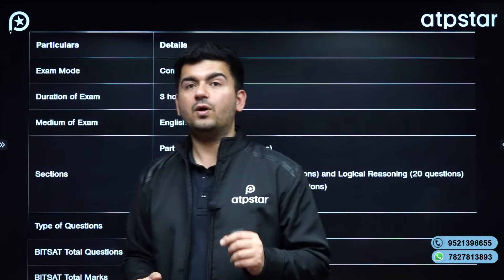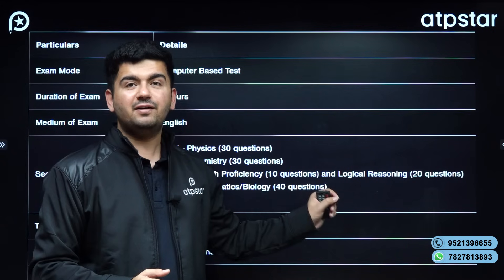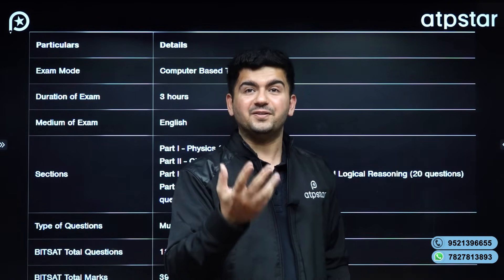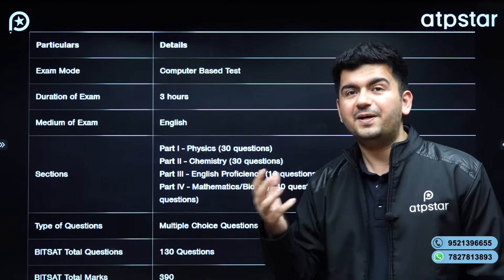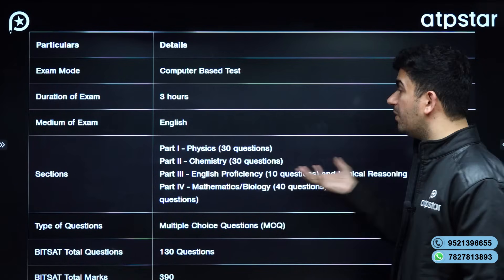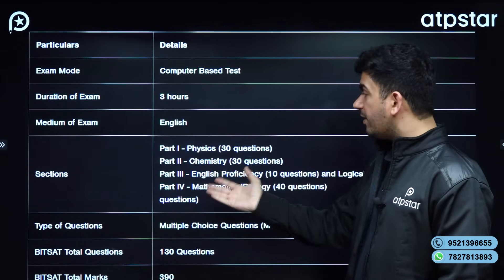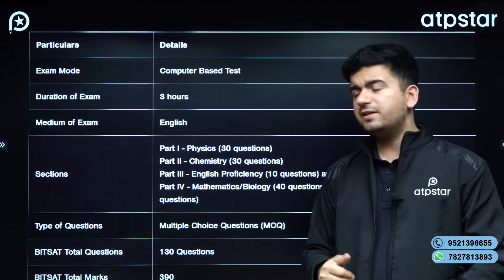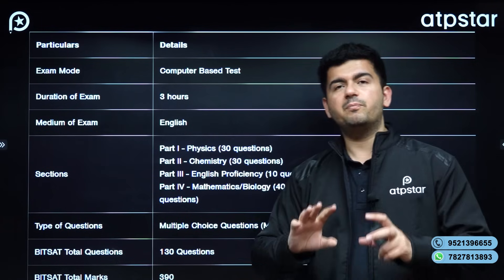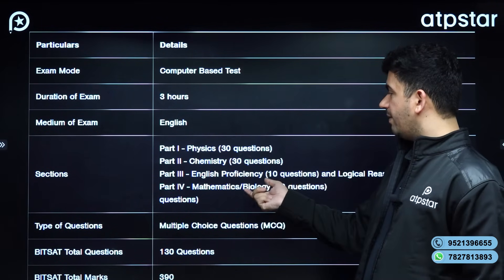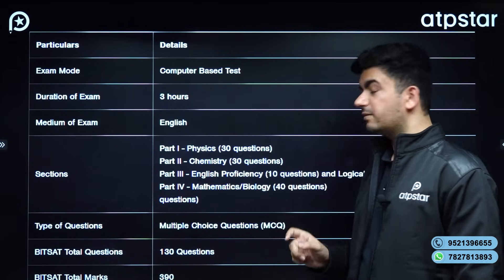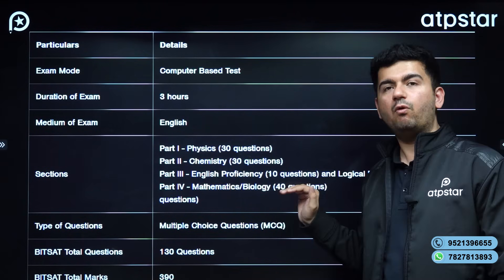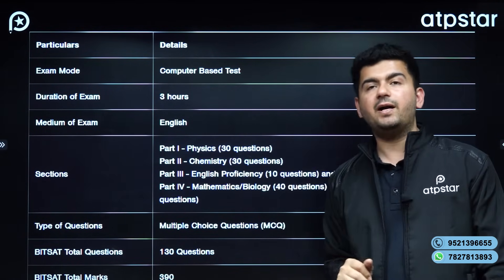You have a total of 30 questions from Logical Reasoning and English Proficiency. Your rank and your selection also depends on this particular section, because 30 questions in total come from parts 3 and 4. Part 4 will have Mathematics for PCM students — for engineering students — and those students who will be going for B. Pharma will have to attempt Biology instead of Mathematics. In Mathematics, it has more weightage — 40 questions will be asked.